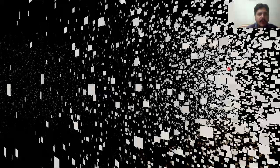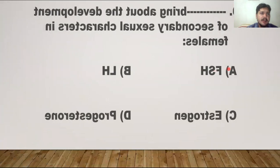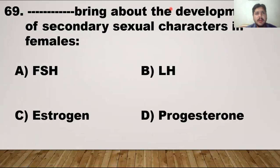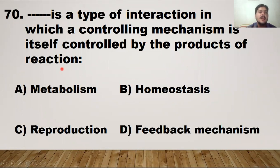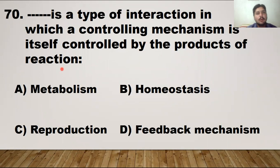MCQ number 69: estrogen hormone is involved in the development of female secondary sexual characters. For MCQ 70: a type of interaction where a controlling mechanism is itself controlled by the products of the reaction it produces is called a feedback mechanism. Option D is the right answer.